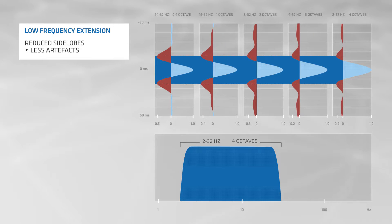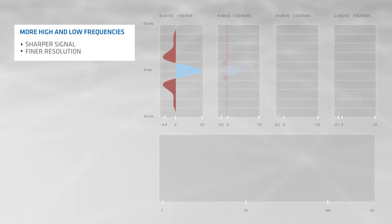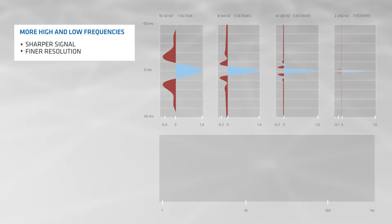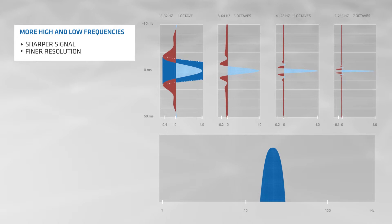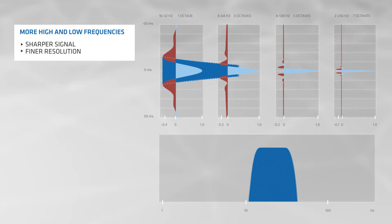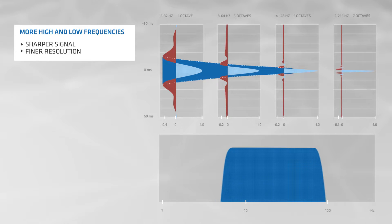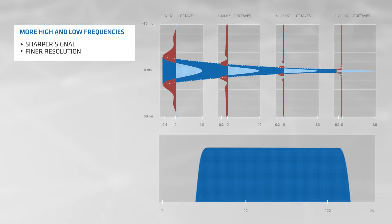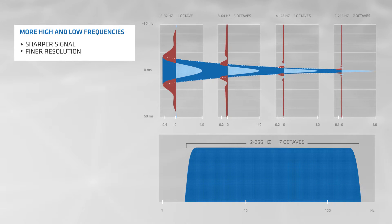Geostreamer technology enables the recording of both extra high and low-frequency information. This results in an overall sharper signal, with finer resolution and deeper signal penetration into the subsurface.